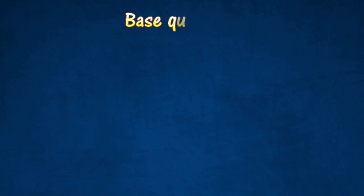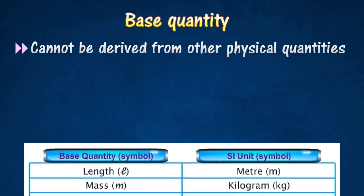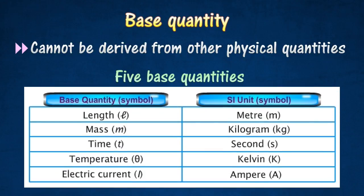A base quantity is a physical quantity that cannot be derived from other physical quantities. The table shows five base quantities and their respective SI units.